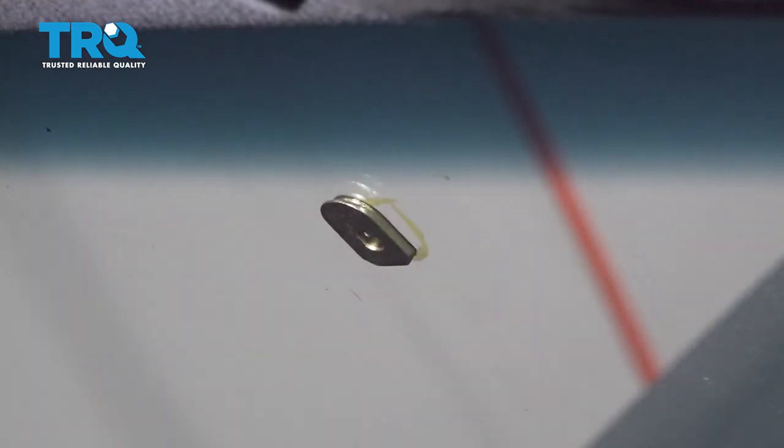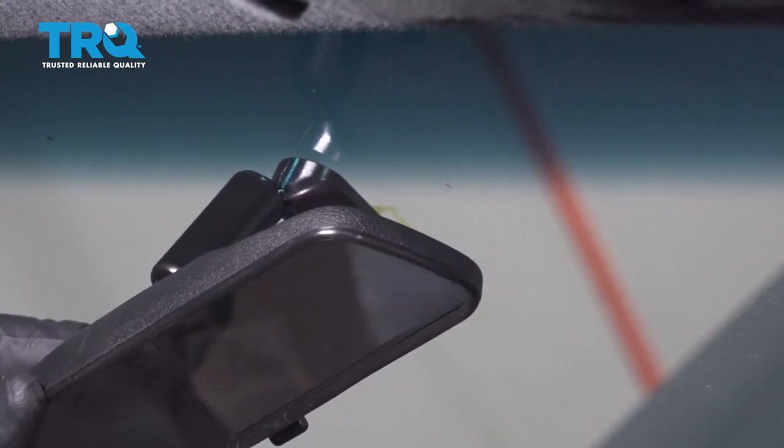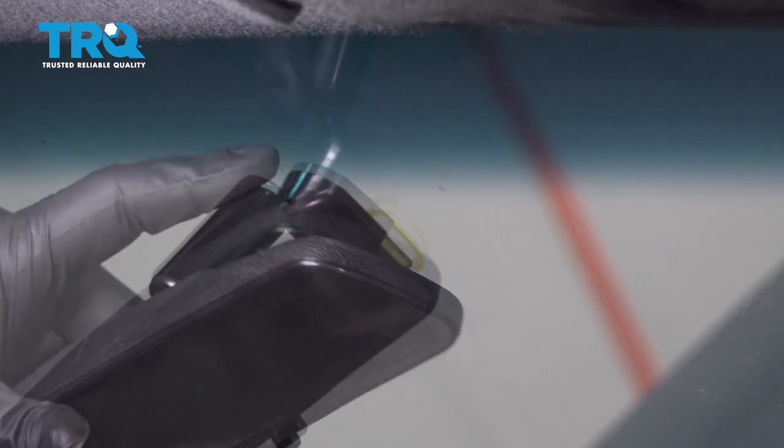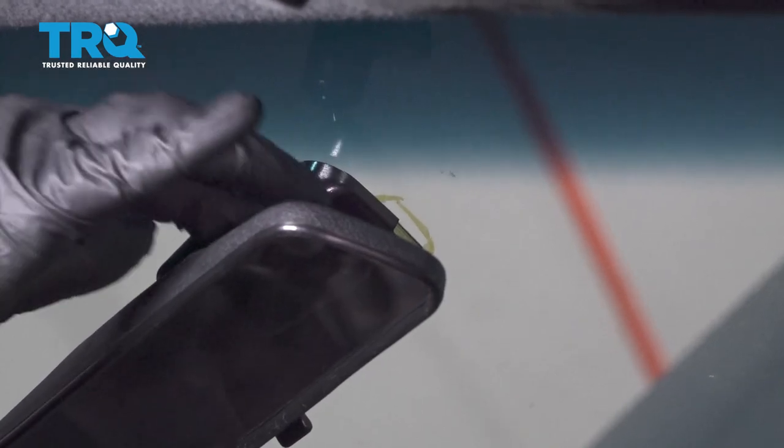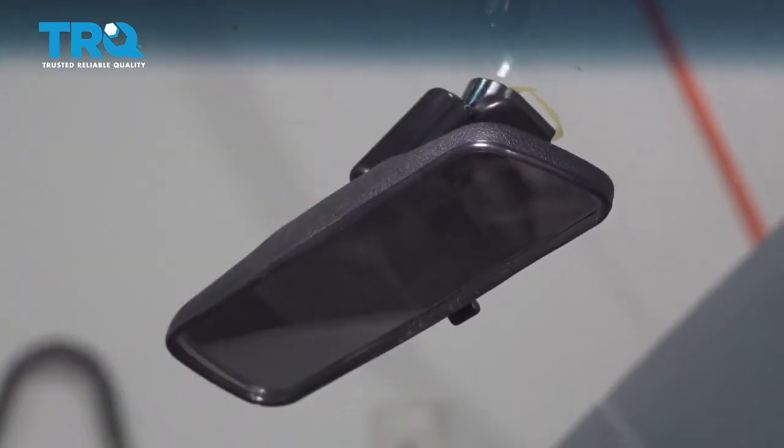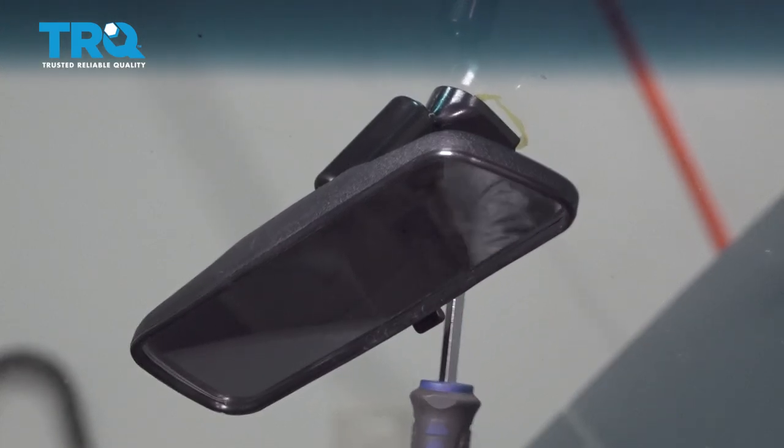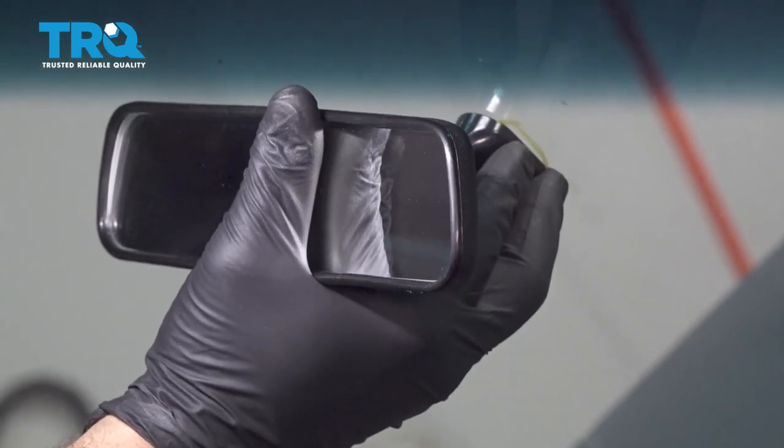Let's go ahead and line up our mirror. Slide that down into place. There is a Phillips head screw on the back. Slide that down and then you can go ahead and tighten up that screw to lock that mirror into place. Once that's all set, you can go ahead and adjust your mirror into place.